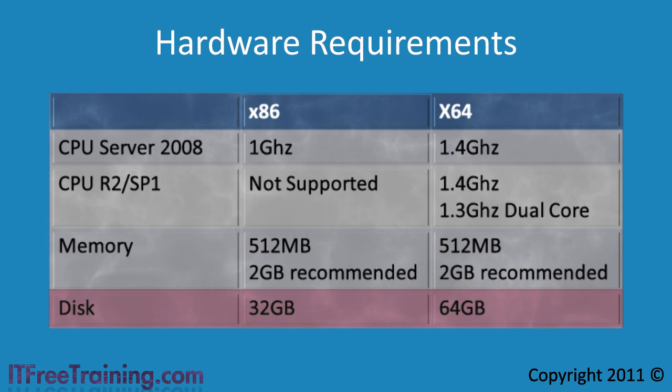For hard disk space, Windows Server 2008 requires a minimum of 32 gigabytes for 32-bit or 64 gigabytes for a 64-bit system. In reality these are the minimums given by Microsoft, so when installing Active Directory I would go at least 100 gigabytes. This gives plenty of room to grow. Nowadays hard disk space is quite cheap, so allocate a decent amount of disk space when possible.